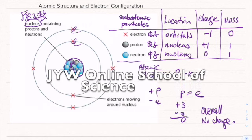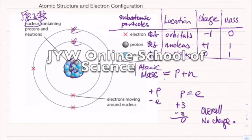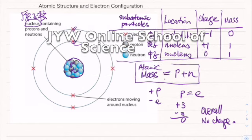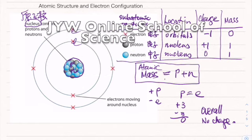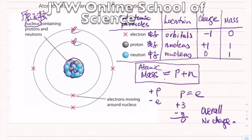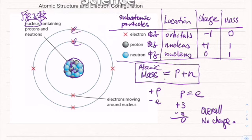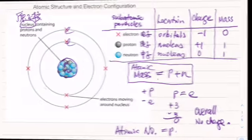Atomic mass equals the proton number plus the neutron number added together. The atomic number is the proton number.